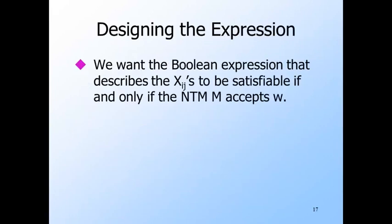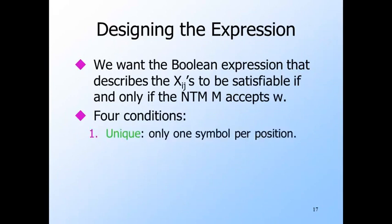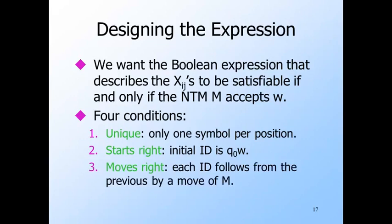The output is an expression we want to be satisfiable if and only if M accepts W. The whole expression is the AND of four sub-expressions, each of which enforces one of four conditions. First is the sub-expression 'unique' — it enforces the rule that there is only one symbol in each position of each ID. The second sub-expression 'starts right' forces the initial ID to be the start state followed by W. The next is 'moves right,' which enforces that each ID follows the previous ID by one move of M, or if the previous ID has an accepting state, the next ID may be the same. Finally, 'finishes right' says that somewhere in the sequence there is an accepting state.